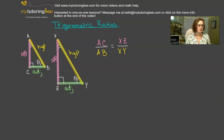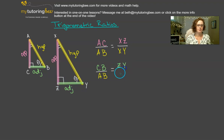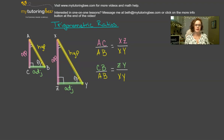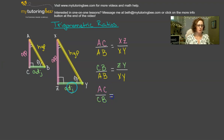Now let's look at the adjacent sides — let's look at CB. CB we're going to set over the hypotenuse, so again AB. And that is proportional to the adjacent side of this larger triangle, ZY, over the hypotenuse XY. We've related the opposite and adjacent sides to the hypotenuse. Now let's relate the opposite and adjacent sides together. If we take the opposite side AC and set that over CB, then that is proportional to the opposite of the larger triangle, XZ, over ZY.